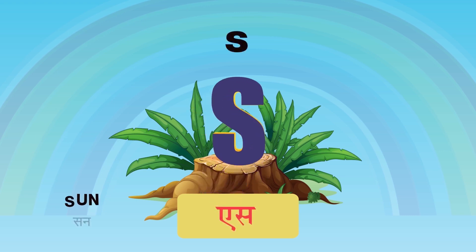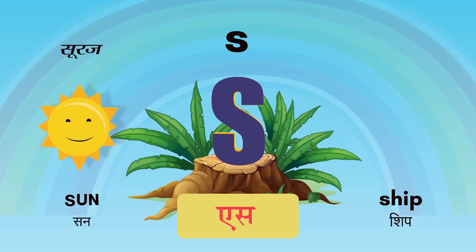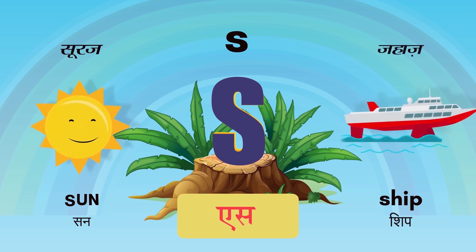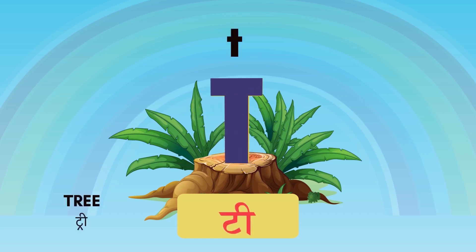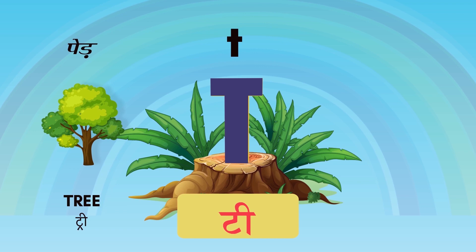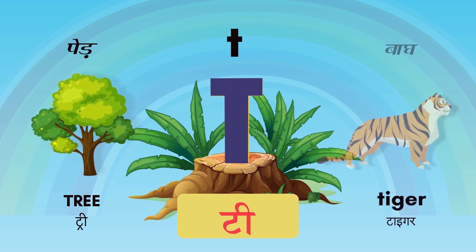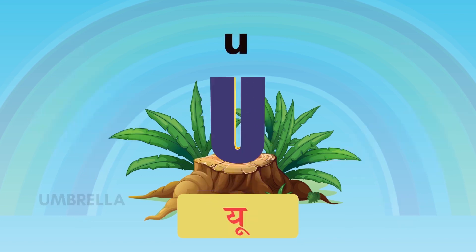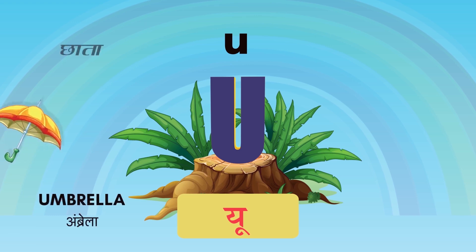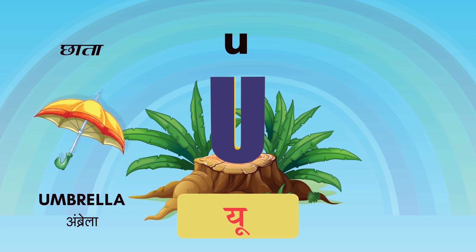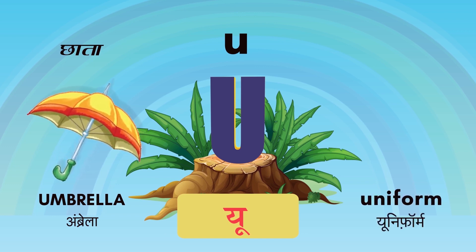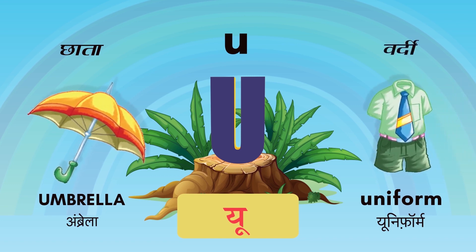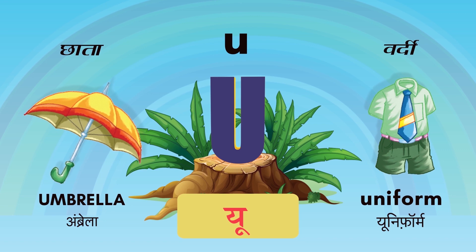S for Sun, Yaani Suraj. S for Ship, Yaani Jahaz. T for Tree, Yaani Ped. T for Tiger, Yaani Bagh. U for Umbrella, Yaani Chhaata. U for Uniform, Yaani Vardi — aap school mein Uniform pehen ke jaate hain na.